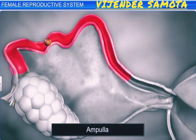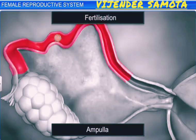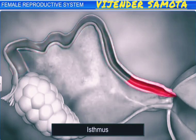The ampulla is the swollen and curved part behind the infundibulum. The fertilization of the ovum takes place in this part. The isthmus is a narrow and straight cavity, and it joins the uterus.